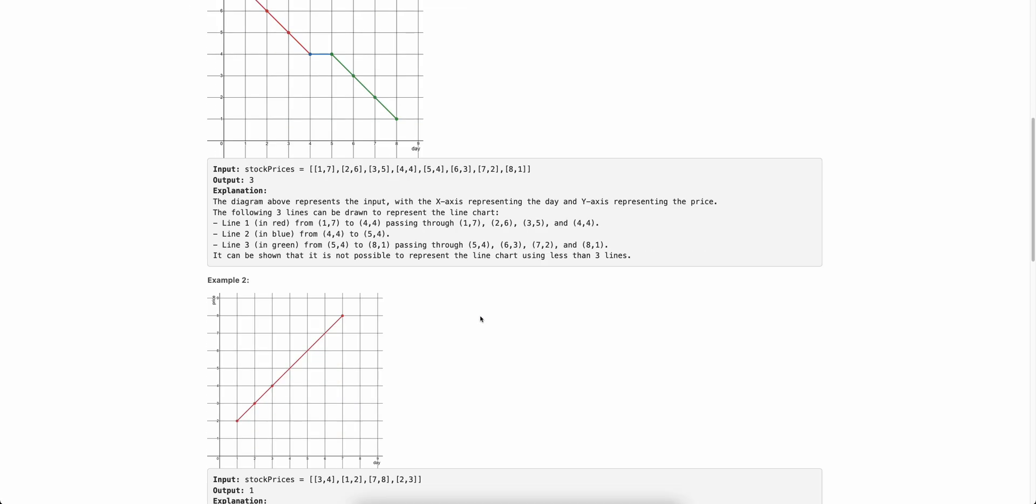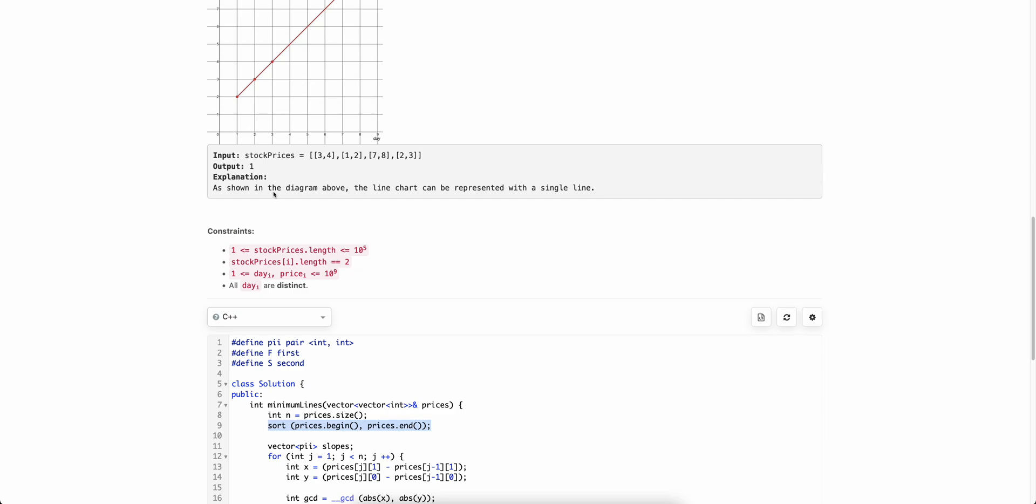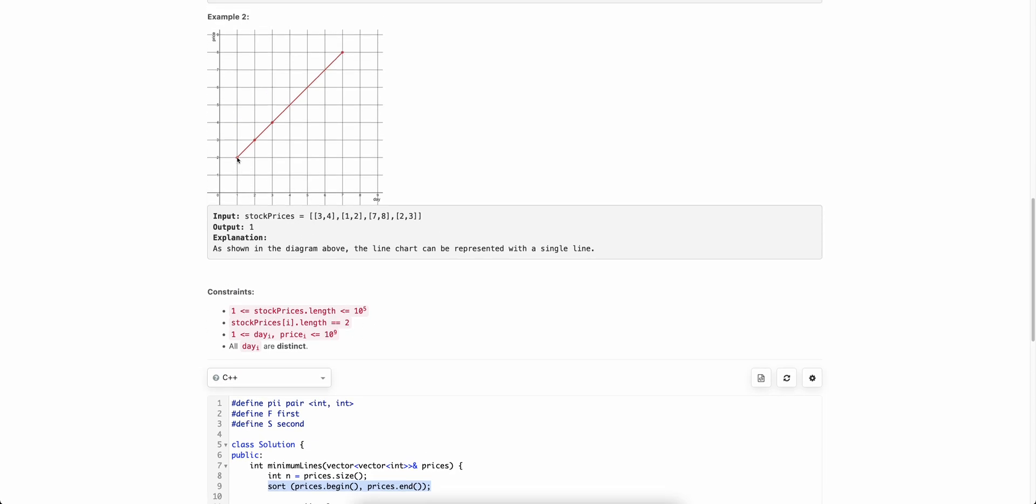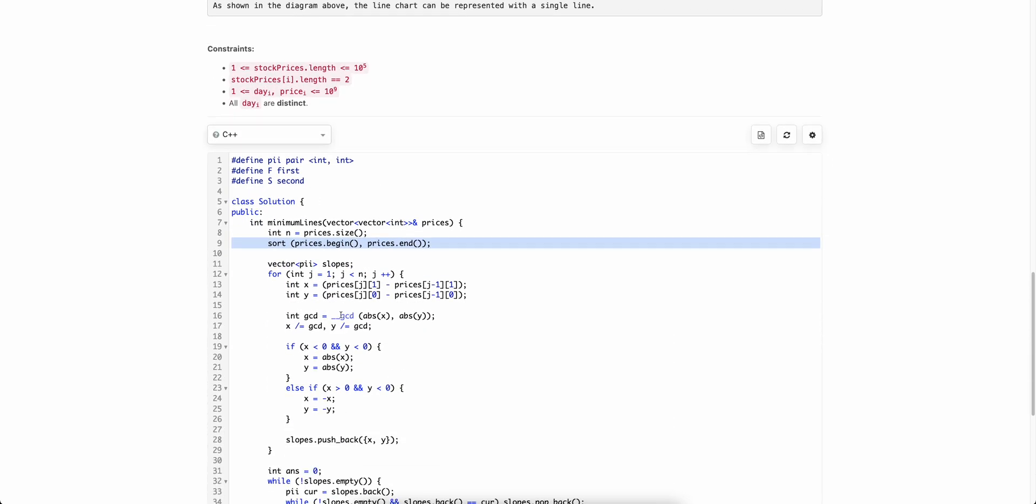It's very simple. As discussed, we are just finding out the slopes. One more thing, we have to sort the prices as well, because it is not guaranteed that it will start with the lowest x. So that's where this step is important.